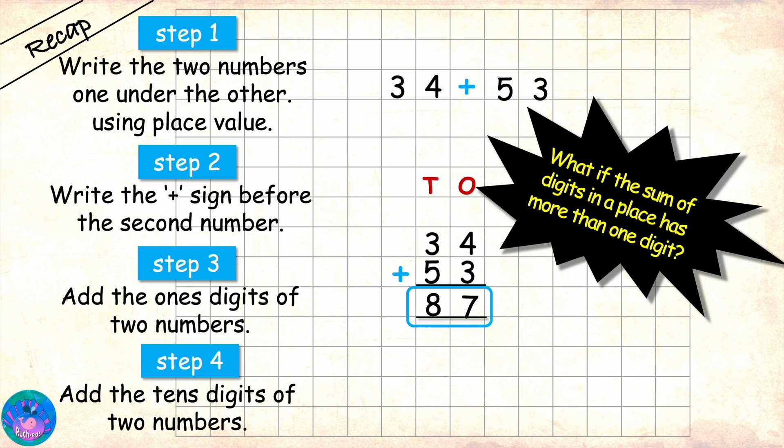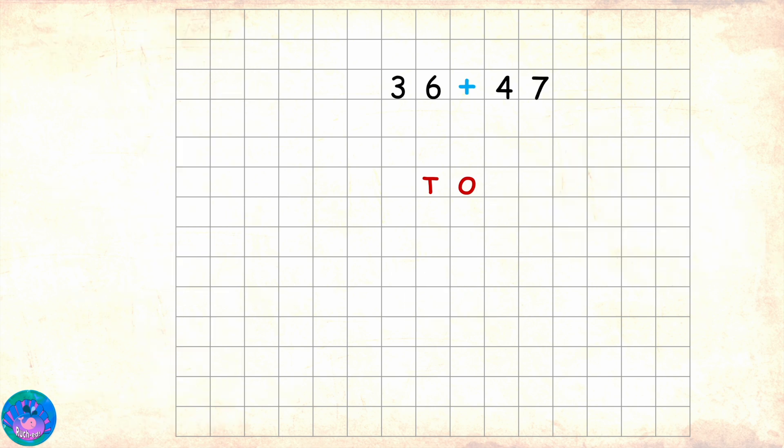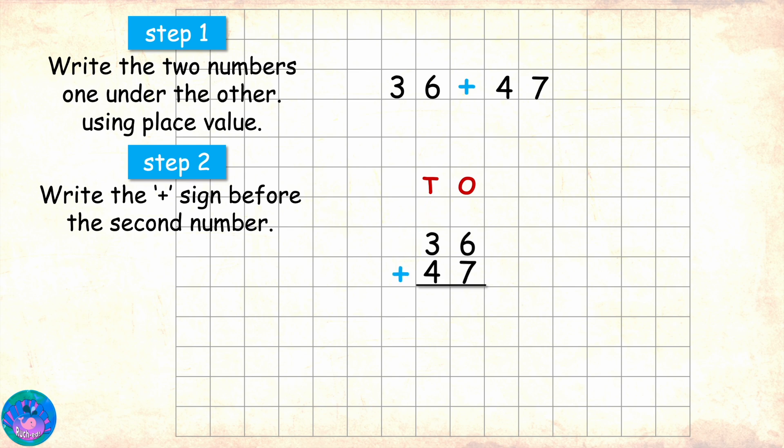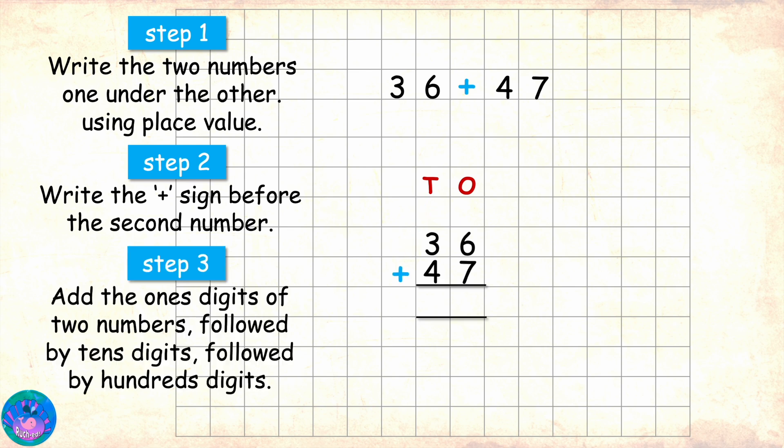Let's take an example. 36 plus 47. So, we write the numbers one under the other. Then we put the plus sign before the second number and mark the area for the answers. We start with ones place. In ones place, we have 6 and 7. Sam, what is 6 plus 7? Miss R, it is 13.